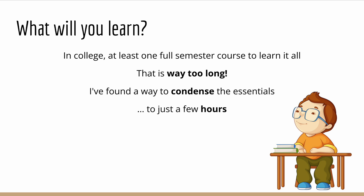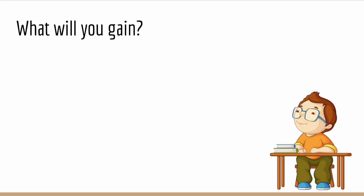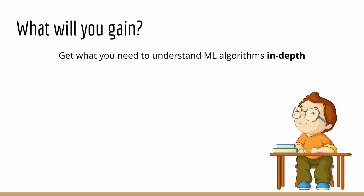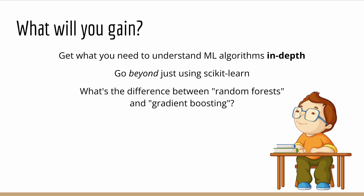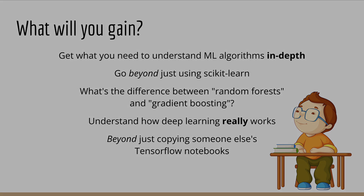I've extracted the most useful concepts and discarded the rest. By the end of this course, you will have learned all the probability you need in order to understand machine learning algorithms in depth. This means going beyond just using scikit-learn and not knowing the difference between a random forest and gradient boosting. This means knowing how neural networks really work, beyond just copying someone else's TensorFlow notebooks.